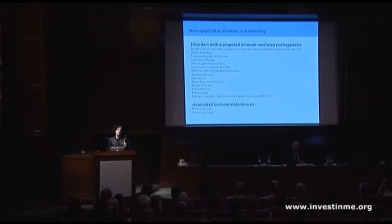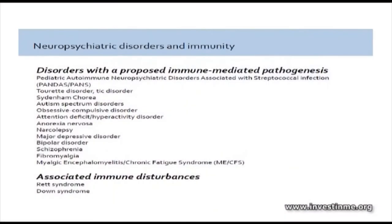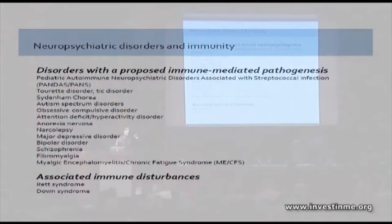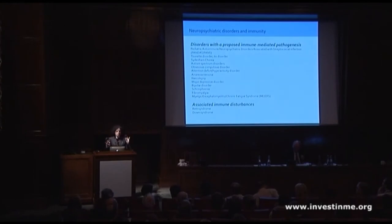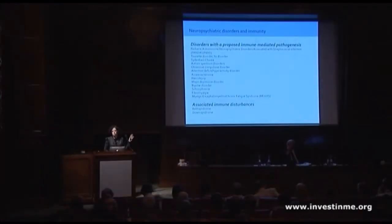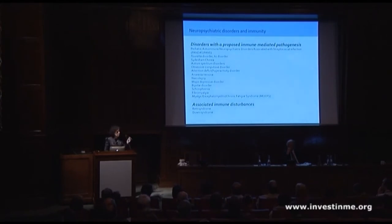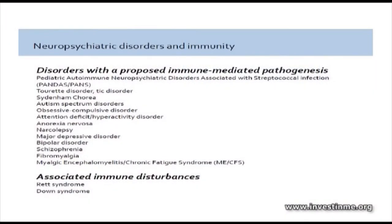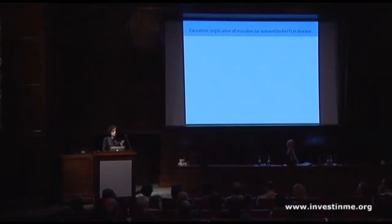Even in disorders that we know are genetically coded, such as Rett syndrome and Down syndrome — which have brain features we tend to think of as being linked solely to genetic factors — even there you see immune disturbances. You see abnormal reactions to a variety of infectious agents. So a variety of brain disorders, whether they have very strong, moderate, or less strong genetic components, have immune disturbances that may play a very strong role in the types of behaviors and neurological and systemic features evident in these disorders.